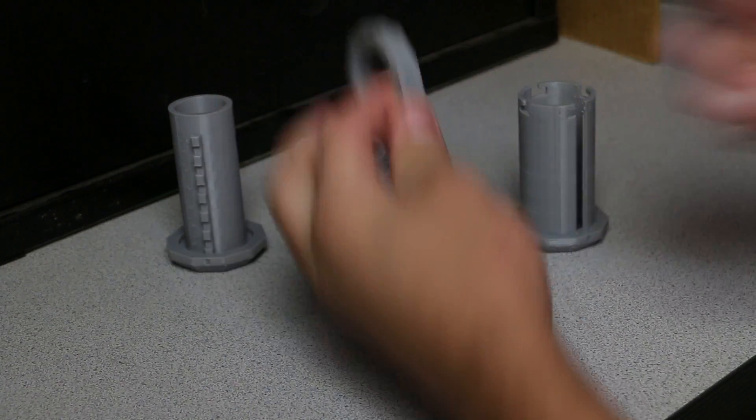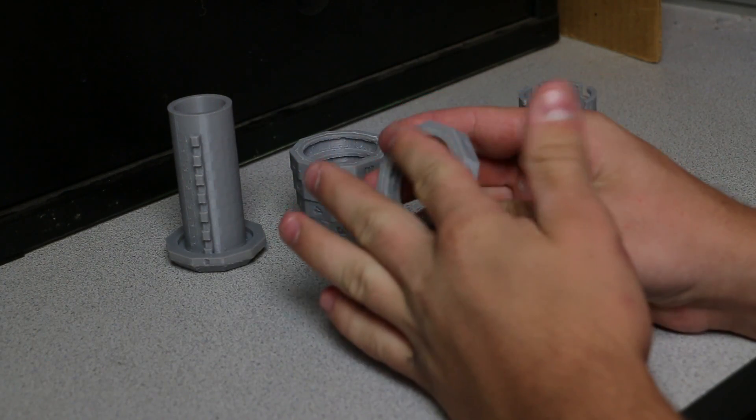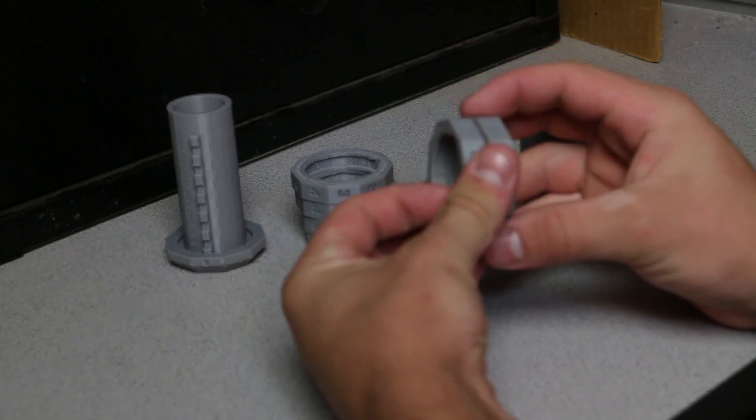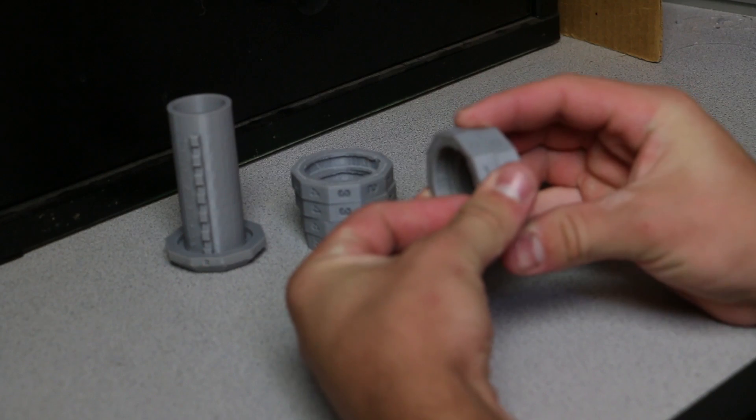All right, so I went ahead and sanded these down here so these are a lot smoother, because if it was rough, then when the digits are next to each other, they're not going to turn very easily.